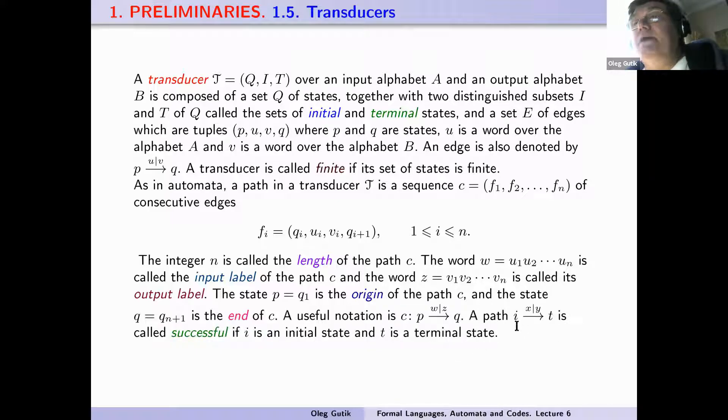A path from i to t with input label x and output label y is called successful if i is in the initial states and t is in the terminal states.